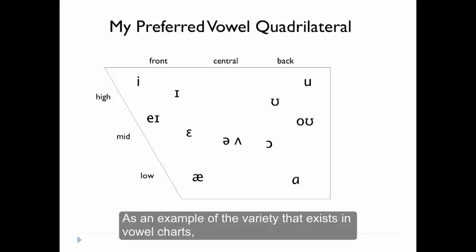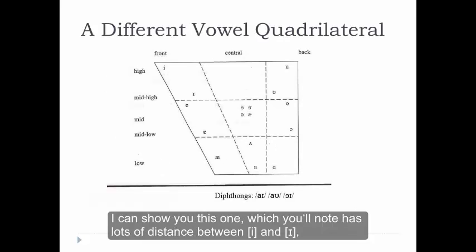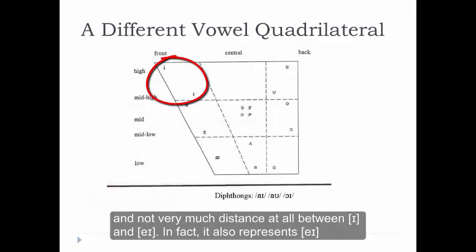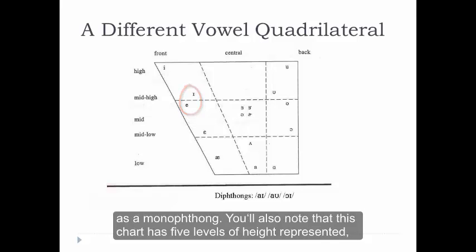As an example of the variety that exists in vowel charts, I wanted to show you this one, which you'll note has a lot of distance between [ɛ] and [ɪ] and not very much distance at all between [ɪ] and [æ]. In fact, it also represents [æ] as a monophthong.